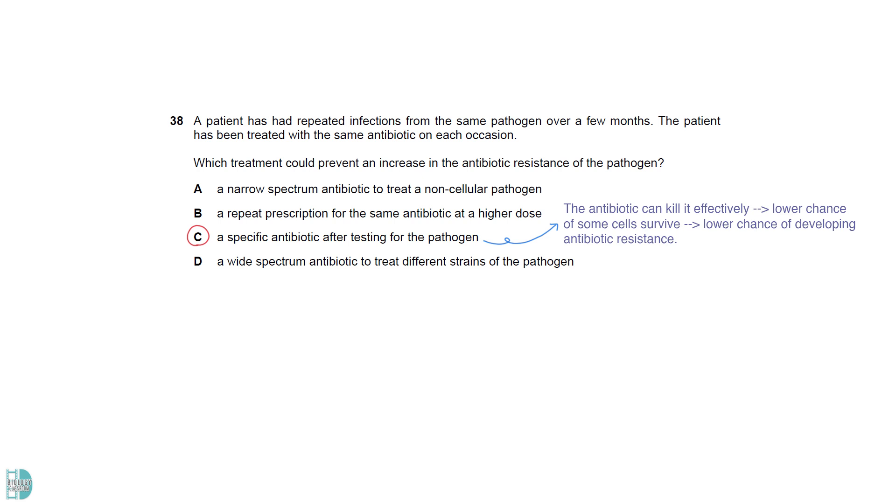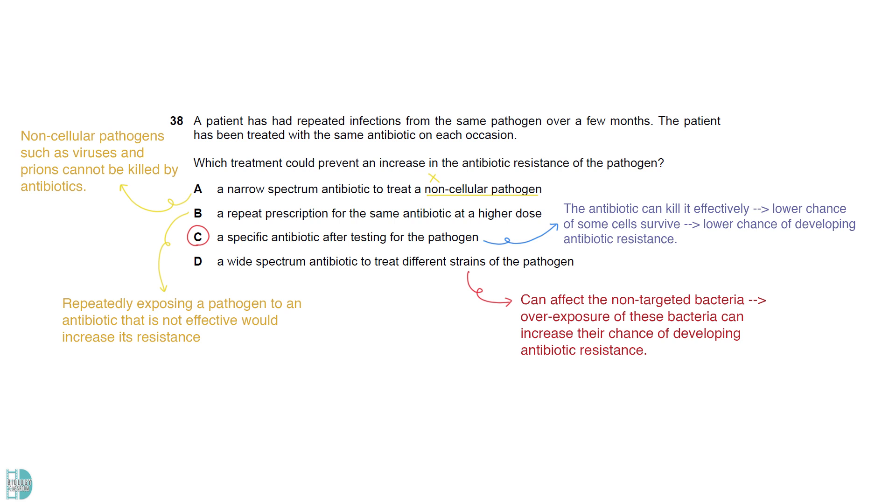If we test a pathogen and use specific antibiotics that can kill it effectively, there will be a lower chance of some cells surviving and developing antibiotic resistance. A is wrong because non-cellular pathogens such as viruses and prions cannot be killed by antibiotics. B is wrong because repeatedly exposing a pathogen to an antibiotic that is not effective would increase its resistance to it. D is incorrect as a wide-spectrum antibiotic can affect the non-targeted bacteria that are normally found in the human body. The overexposure of these bacteria to a wide-spectrum antibiotic can increase their chance of developing antibiotic resistance.